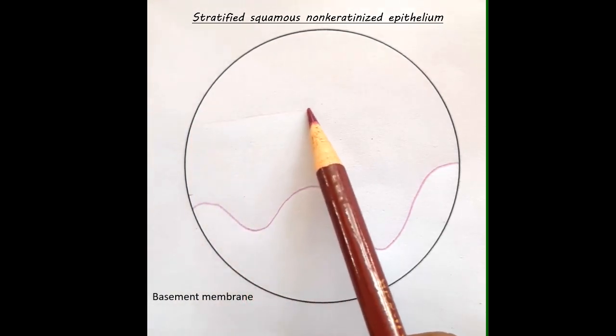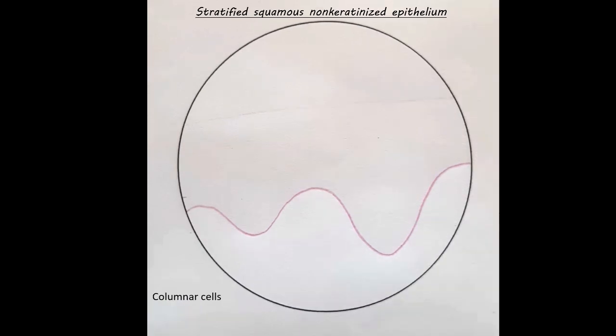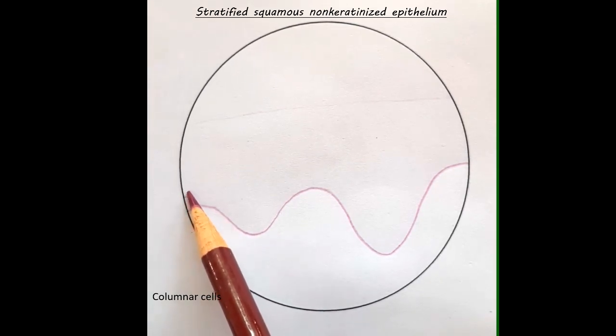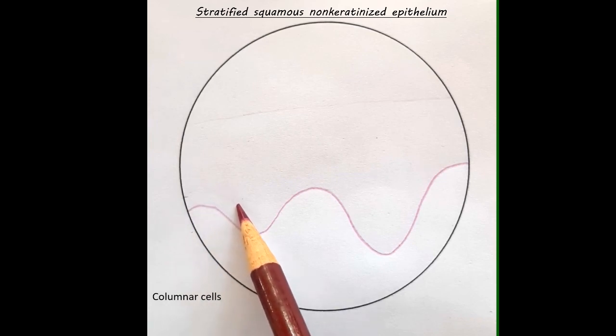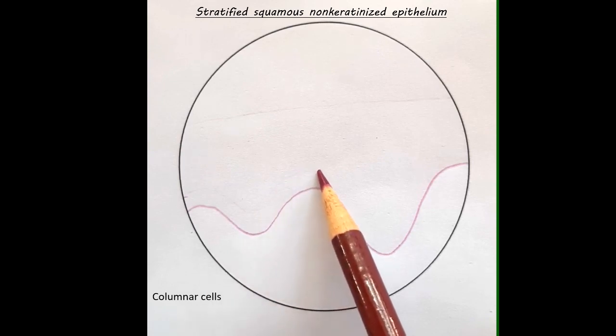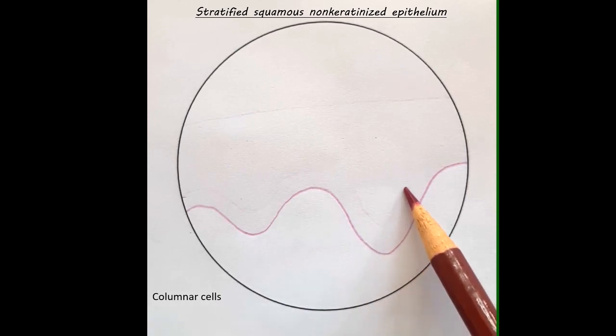Now let's draw the uppermost layer of the epithelium. So this is the framework within which we will be drawing the entire epithelium. The next step is to draw a faint reference line which is parallel to the basement membrane. The purpose of drawing this faint reference line is to help us to draw the columnar cells with a uniform height.